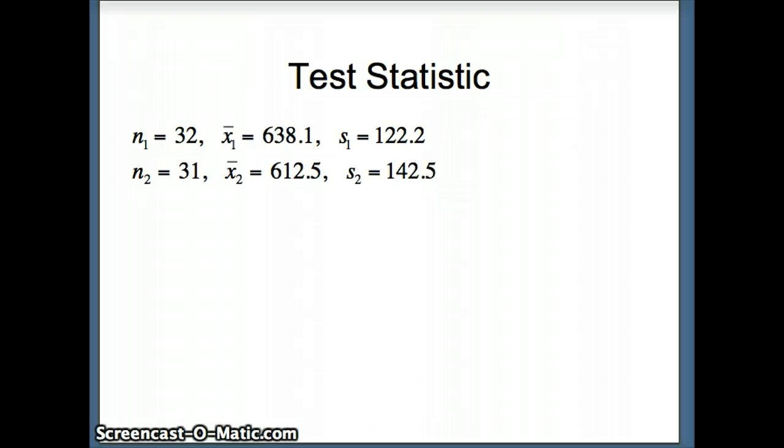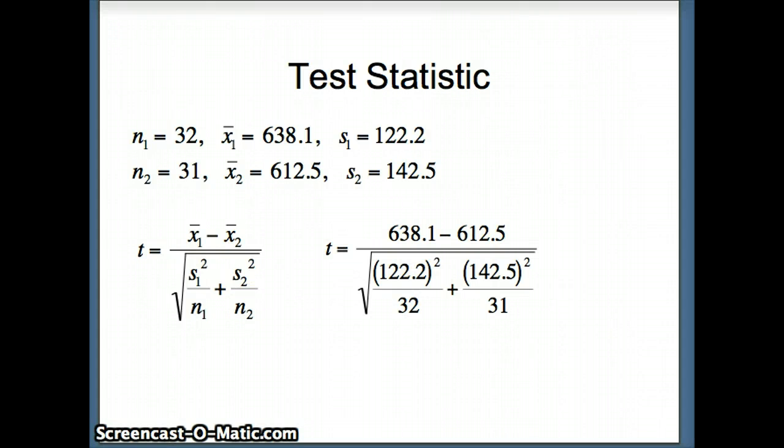We want to compute the test statistic. We will use the formula that we had seen earlier. We're going to plug 638.1 in for x1 bar minus 612.5 for x2 bar, divided by the square root of s1 squared, 122.2 squared over n1 over 32, plus 142.5 squared over n2 over 31. I will go to Excel to assist me in that computation.